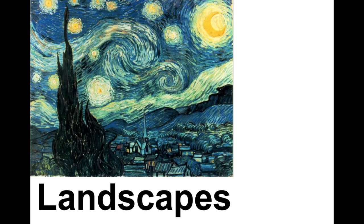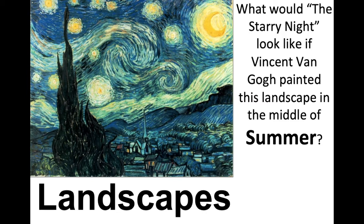What if Vincent van Gogh gets up one morning and decides to go outside and paint a landscape — but this time it's in the middle of summer? What clues would we see in the painting that would give you the idea it was painted in summer? I hope that you would have mentioned the sun. We could have changed the whole title — instead of calling it The Starry Night, we could have called it The Sunny Day. The hills could have been green, the trees nice and lush. We could have seen people outside in t-shirts or playing games you'd see in the summertime.